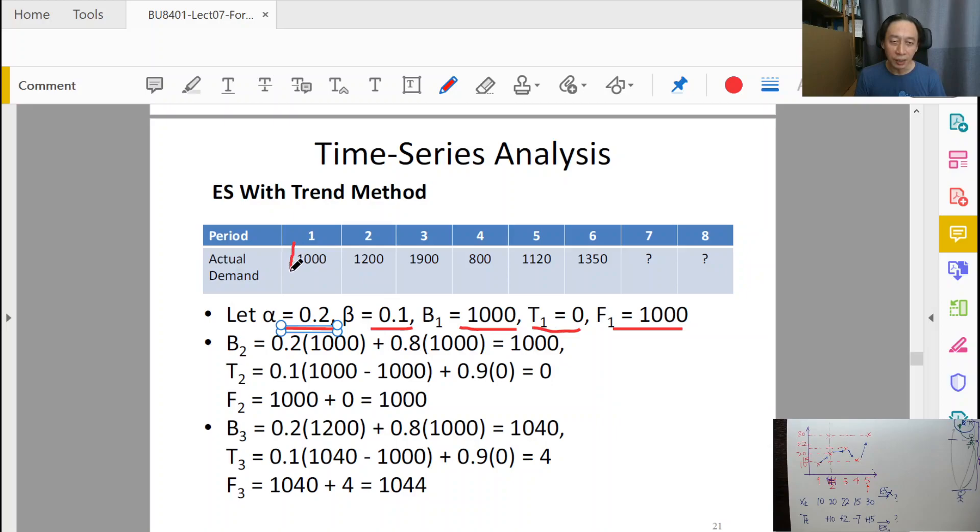We just received the data - that's 1000 here - and we need to forecast for time t=2. At that point we don't know that the actual demand is 1200 yet. To get F_2, we calculate B_2 = α(1000) + (1-α)F_1. This 1000 comes from here, giving rise to B_2 = 0.2(1000) + 0.8(1000) = 1000. Then T_2 = β(1000 - 1000) + (1-β)T_1. This first 1000 comes from B_2 and the second 1000 comes from B_1.